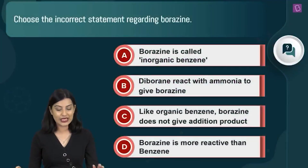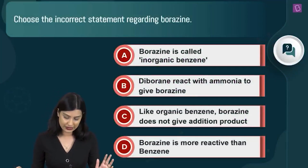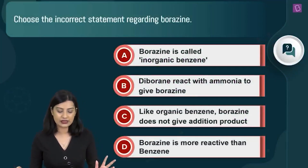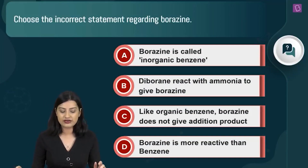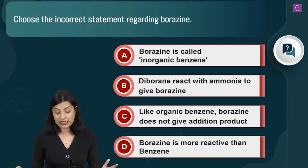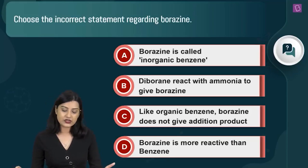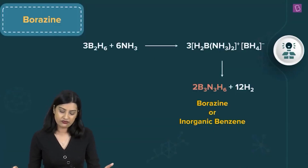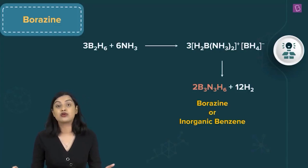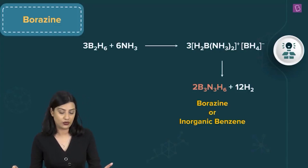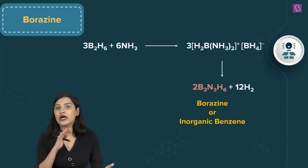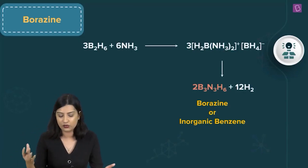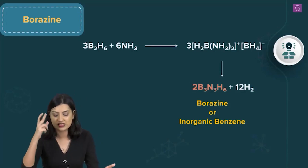The next question asks for the incorrect statement about borazine. The options state: (A) borazine is called inorganic benzene, (B) diborane reacts with ammonia to give borazine, (C) like organic benzene, borazine does not give addition products, (D) borazine is more reactive than benzene. Borazine is indeed produced by reacting diborane with ammonia in a 1:2 ratio at high temperatures.